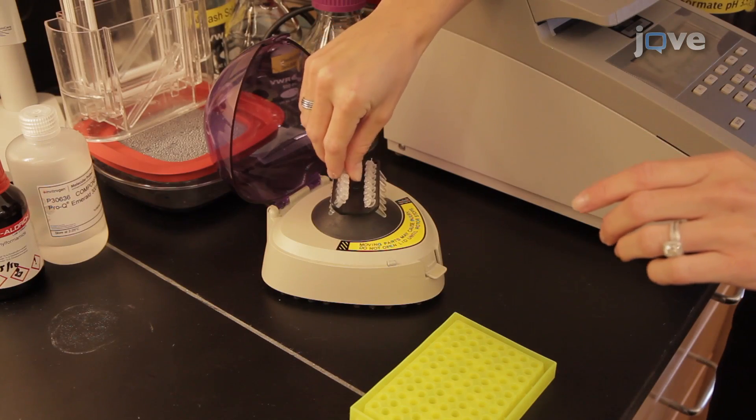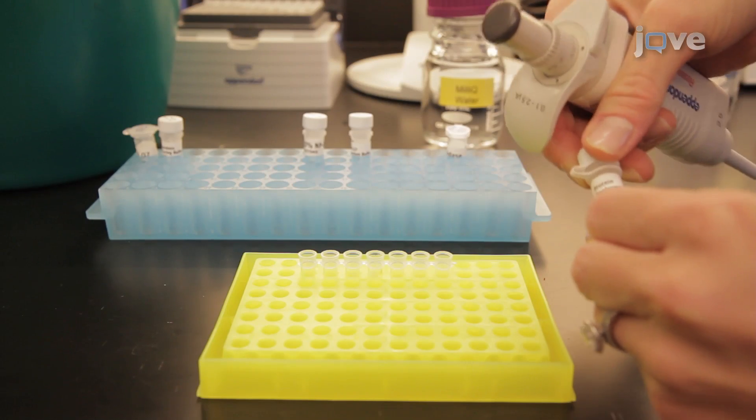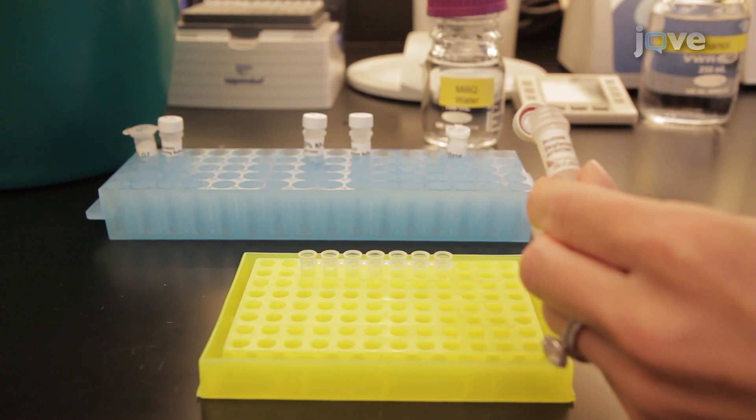After removing the tubes from the thermocycler, centrifuge to remove any visible condensation. To each reaction tube, add the remaining reagents according to the written protocol.